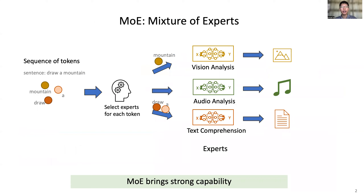So what is MoE? A MoE model includes many experts. The model takes a sequence of tokens as input, such as a sentence. The model will select the specialized experts to handle each token and generate the output. With a large amount of experts, MoE models have strong capability.